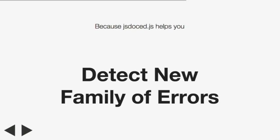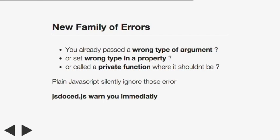You can impose the type of values of various variables - for example, arguments within a function, return type of a function, or any properties. You can even put a validator, meaning this variable must stay between 20 and 30, or if it's more than that, throw an exception.